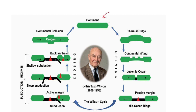The first phase of opening starts from a continent that experiences a thermal bulge due to the uplift of hot molten magma, which is buoyant and lighter. This develops cracks in the continental crust. As a result, the continent starts to separate into two blocks, giving rise to continental rifting.